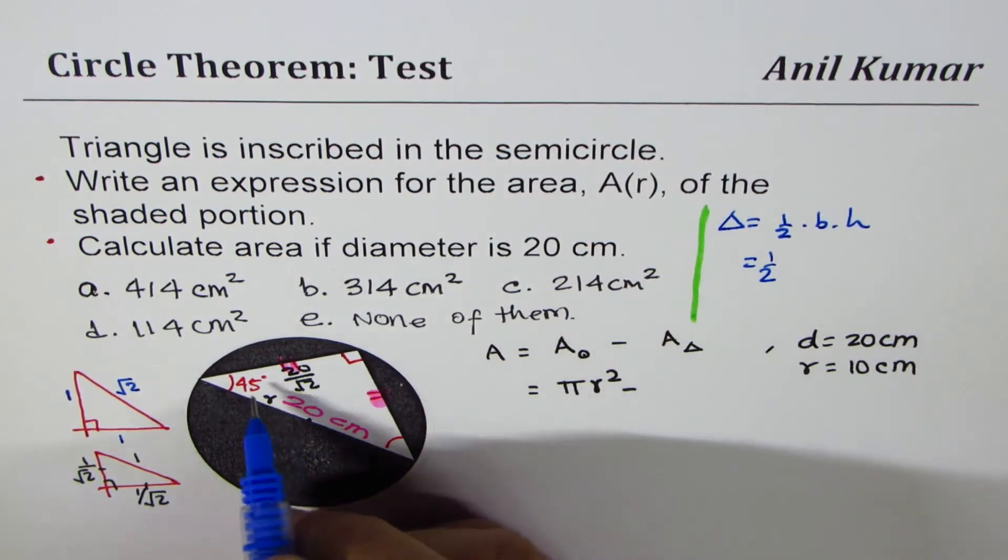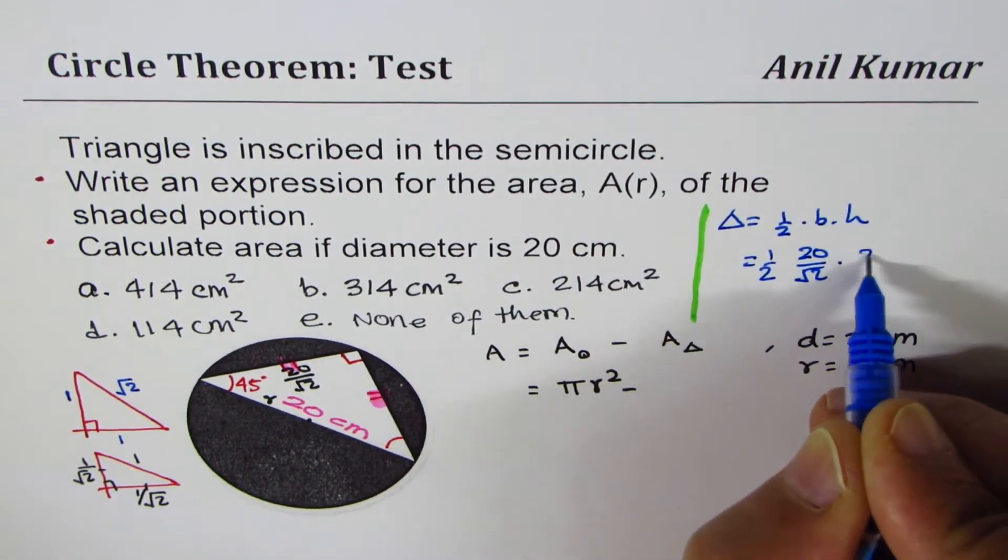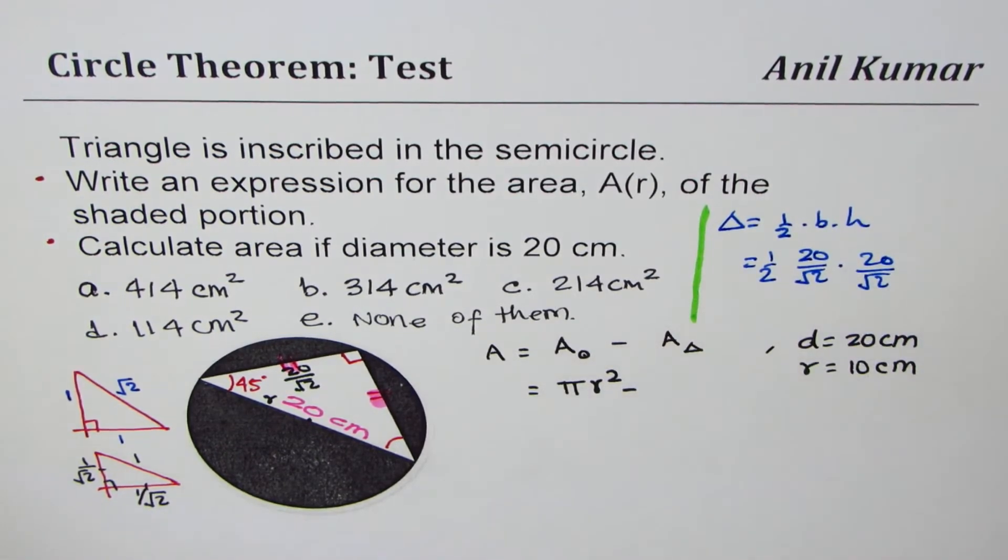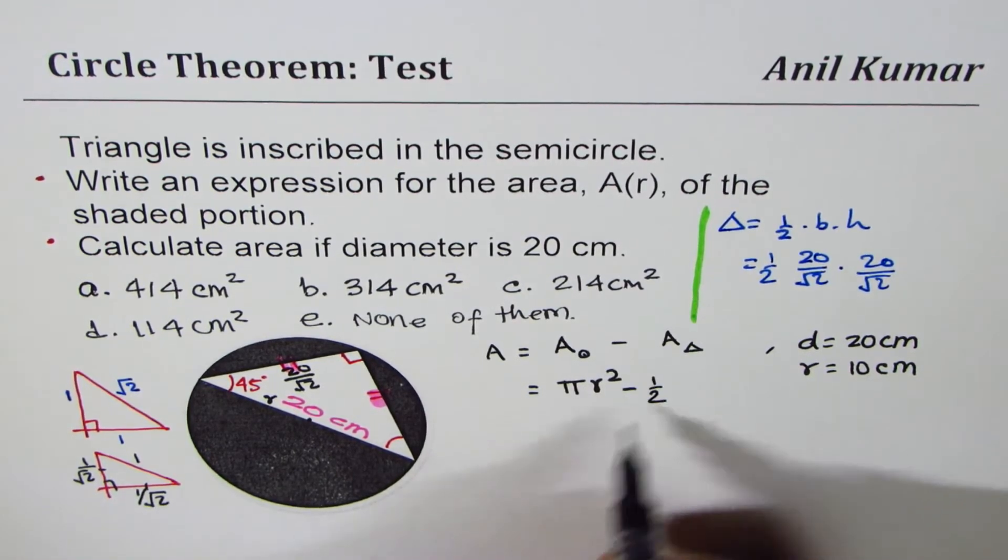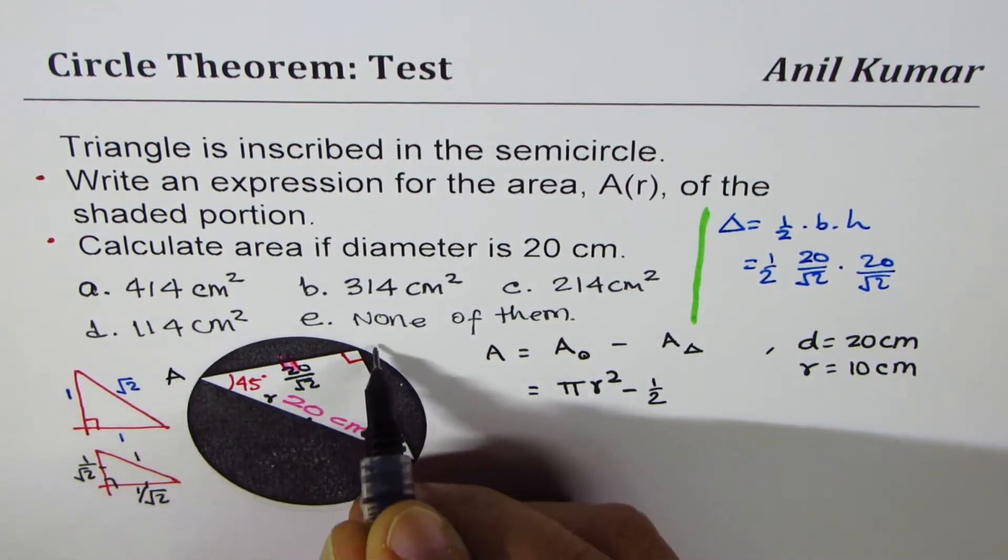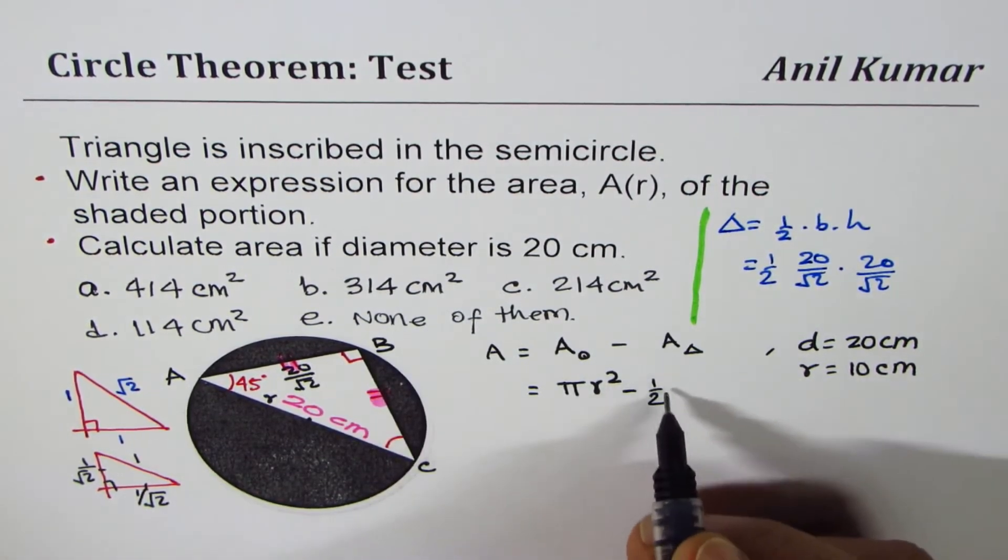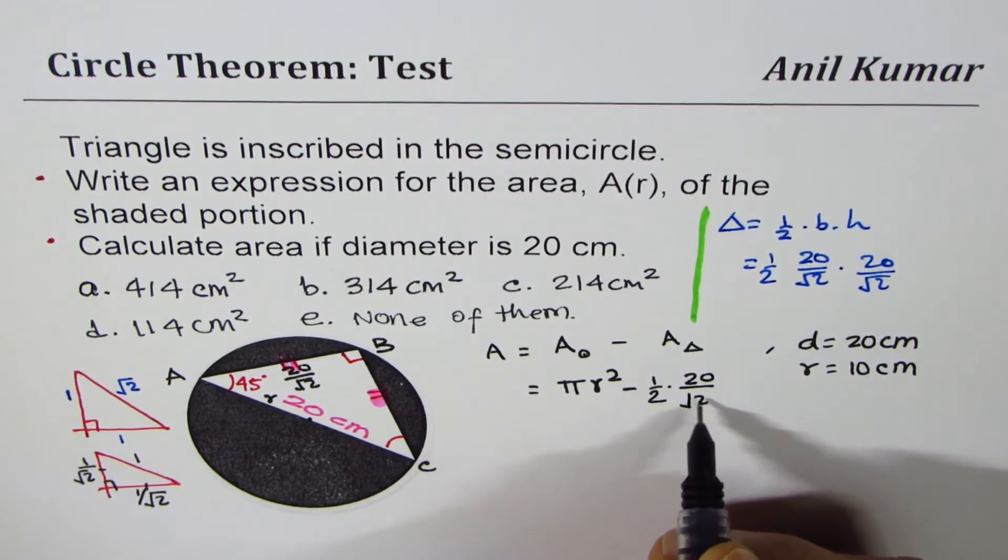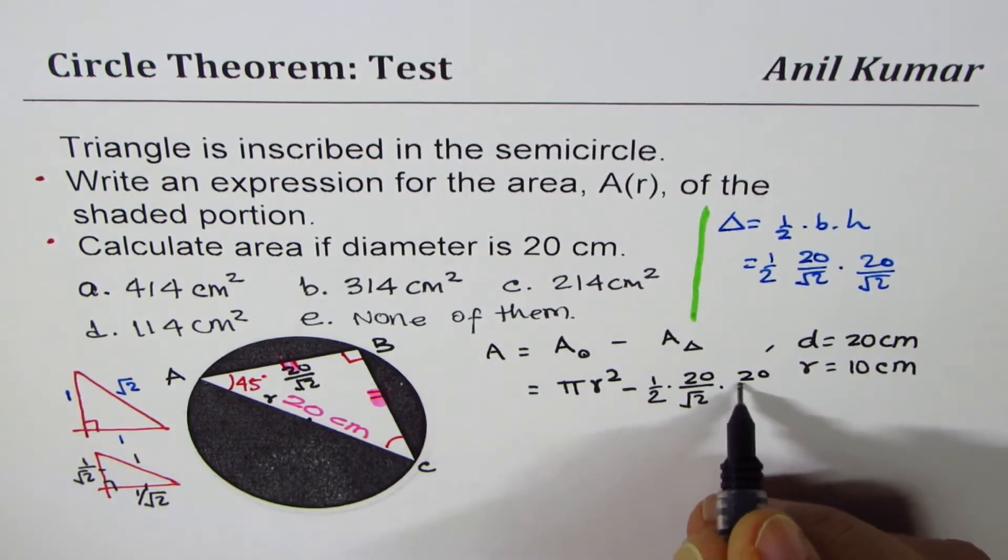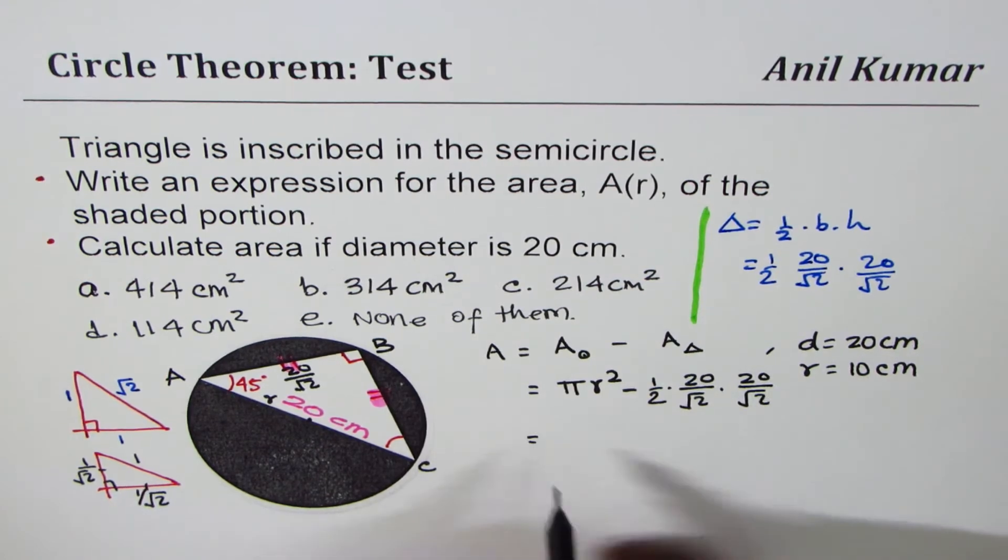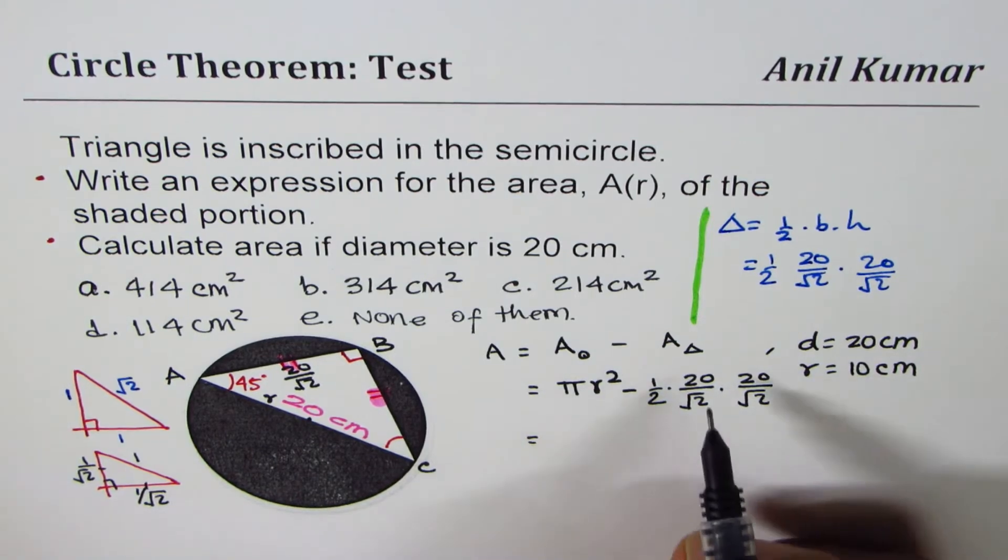Area of triangle is half base times height. In our case, it is half. Base is one of these sides, not the hypotenuse. So it is 20 over square root 2 times height is also 20 over square root 2. So we can write down area of the triangle as half base. One of these, let's call this as ABC. Then AB and BC are the two sides to be taken. So times 20 over square root 2 times base is 20 and height is also same, 20 over square root 2. I hope this step is absolutely clear.